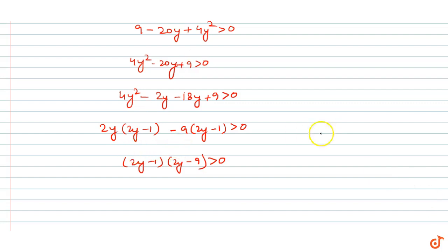If we set this equal to 0, we get the roots y = 1/2 and y = 9/2. Plotting these on a number line gives us 1/2 and 9/2.